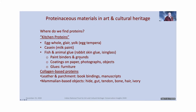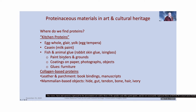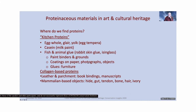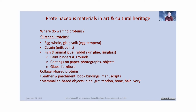Where do we find proteins in art and conservation? The kitchen proteins — I call them that because they originate in the kitchen: eggs, casein, animal glues. These are found in paint binders, grounds, coatings on paper, photographs, and objects, and all types of glues such as furniture glues. Then there are collagen-based proteins, found pervasively in cultural heritage such as leather, parchment, book bindings, and many mammalian-based objects made from hide, gut, and tendon.